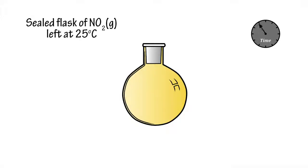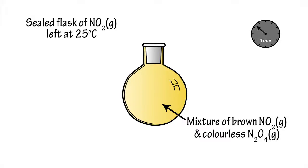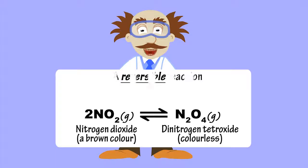However, after a certain point, the gas in the flask retains a brownish yellow tinge that does not diminish with time, suggesting the end result of the overall reaction is a mixture of NO2 and N2O4.